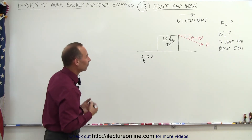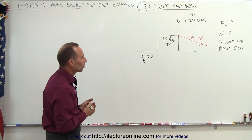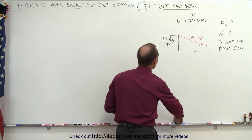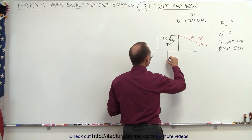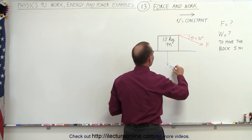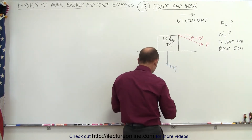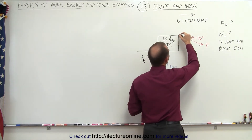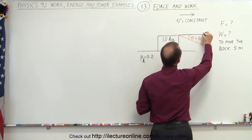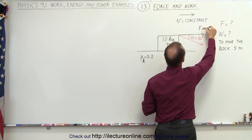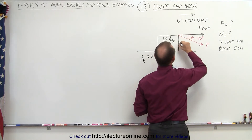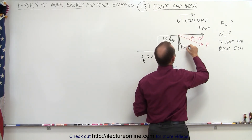First, let's find out how much force is required, so we need to identify all the forces on the problem. We know we have the weight pulling down — that would be mg. If we take the components of the force we're pulling with, we have a horizontal component equal to F times the cosine of theta, and a vertical component equal to F times the sine of theta.